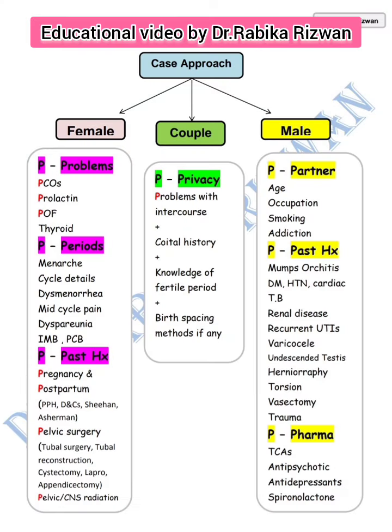P for partner — husband سے related important چیزیں: husband کی age، husband کا occupation. Sedentary lifestyle اور office work سے testicular pressure ہوتا ہے، جس سے sperm count اور motility disturb ہو جاتی ہے. Radiation exposure والی job میں بھی male pattern infertility ہوتی ہے. Smoking addiction سے بھی sperm count اور motility خراب ہو جاتی ہے.